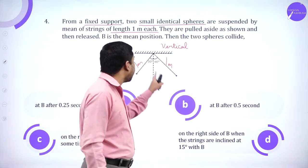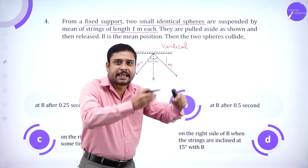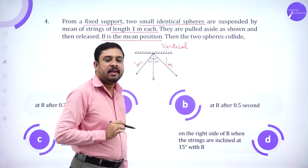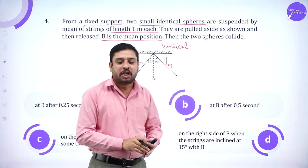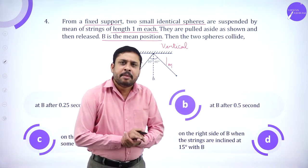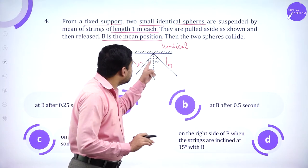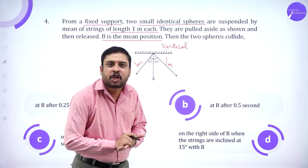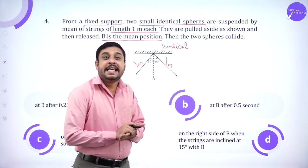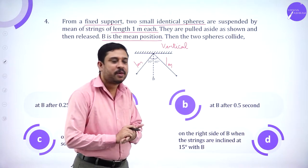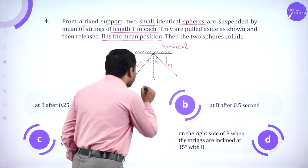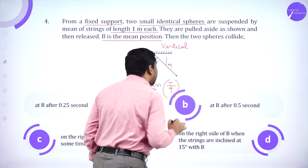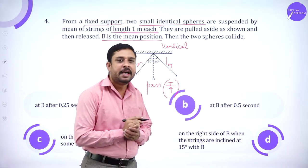They are pulled aside as shown and released from their mean position — B is the mean position. Then when and where will the two spheres collide? Since this is simple harmonic motion, exactly like a simple pendulum, irrespective of the amplitude, both spheres pass the mean position at a time interval of T/4 seconds.